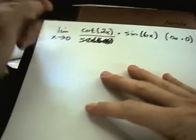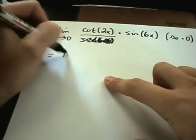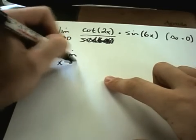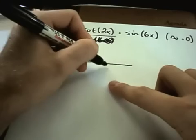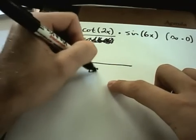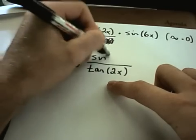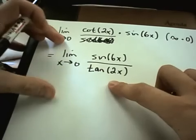Again, I have to put one of these in the denominator. I'm going to put the cotangent in the denominator. And again, I could write it 1 over cotangent, but 1 over cotangent is the same thing as just tangent of 2x.